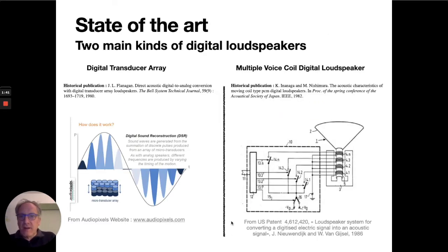The idea of a digital loudspeaker is not recent, and there are already several studies in the literature. There are mainly two types of digital loudspeakers. The first type is what we call a digital transducer array, first proposed in 1980 by Flanagan. In this system, several micro speakers are driven by the digital signal and generate pressure pulses to reconstruct the analog sound signal.